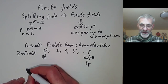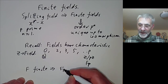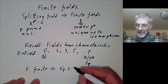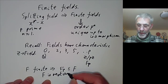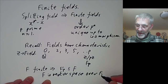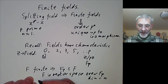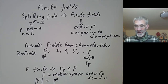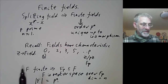If F is finite, it must have characteristic p for some prime p, so the finite field of order p is contained in F. This means F is a vector space over F_p, and if the dimension equals n then the order of F equals p to the n. So any finite field must have order equal to a power of some prime.